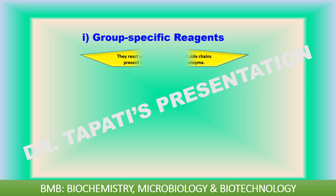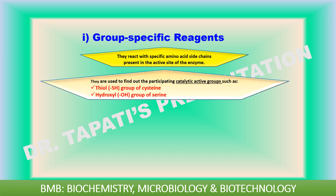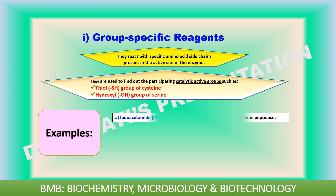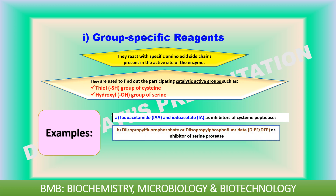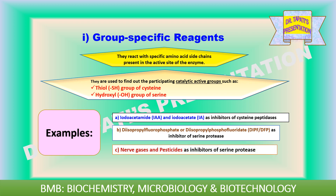Group specific reagents react with specific amino acid side chains present in the active site of the enzyme. They are used to identify participating catalytic active groups such as the thiol group of cysteine and the hydroxyl group of serine. Examples include iodoacetamide and iodoacetate as inhibitors of cysteine proteases, diisopropyl fluorophosphate as an inhibitor of serine proteases, and nerve gases and pesticides as inhibitors of serine proteases.